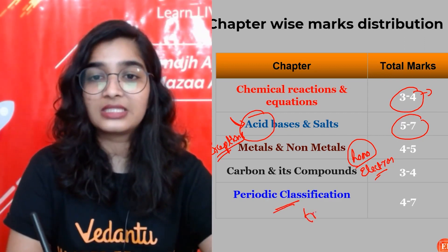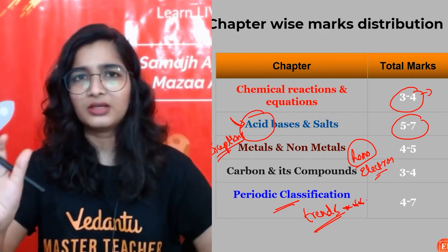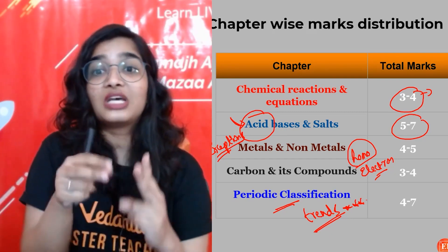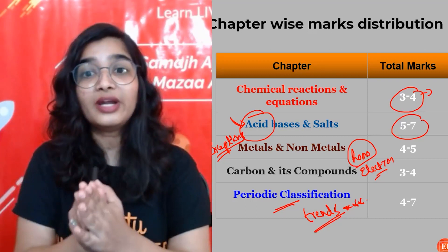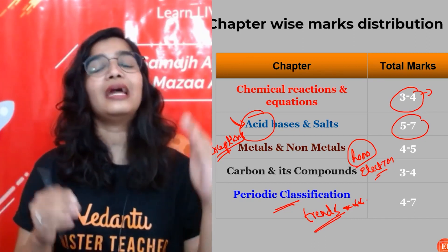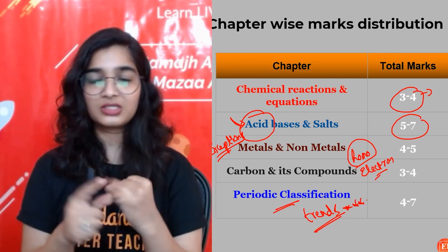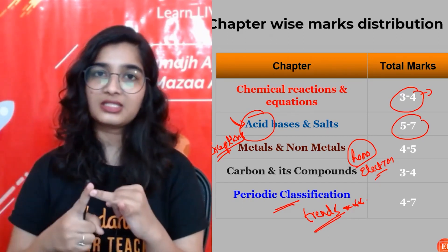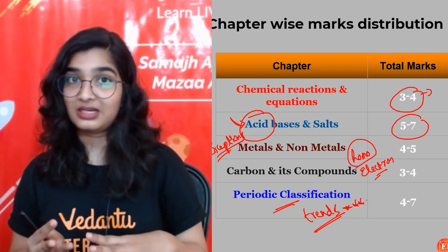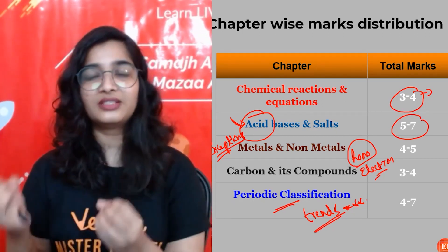Chapter 5 — Periodic Classification: trends are super important. They may give you a small periodic table segment and ask you to identify which element is most electronegative, or which has the greater atomic size. You need to know what happens to atomic size across a period and down a group. For the modern periodic table, know how many groups and periods there are, and all the trends.